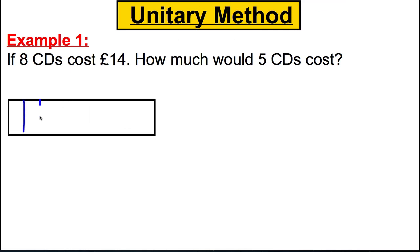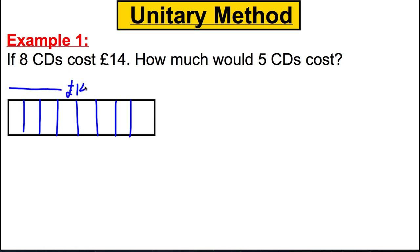We divide the box into 8 equal sections — 1, 2, 3, 4, 5, 6, 7, 8. Now all of the 8 CDs in total cost £14 and we're trying to work out what must go in each of the boxes.